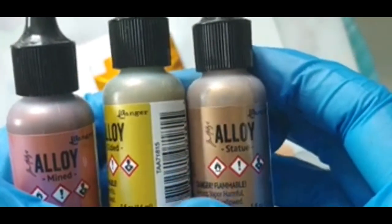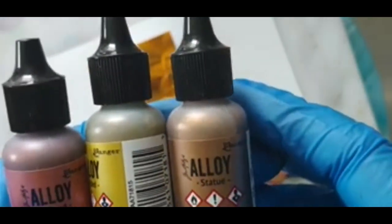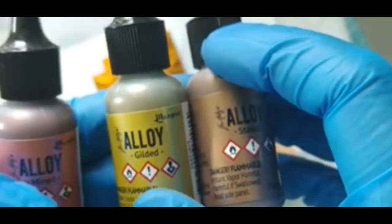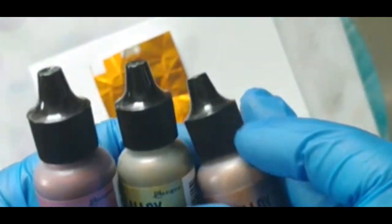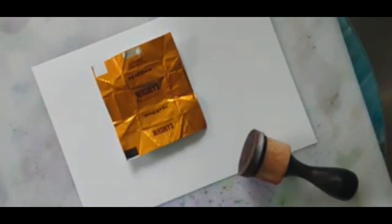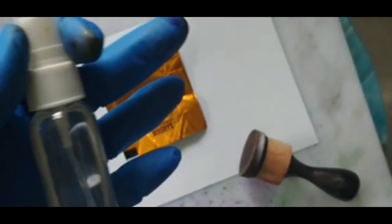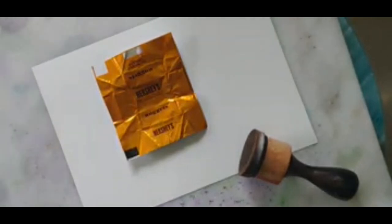For the yellow and orange, my favorite yellow Dijon—it's one of the new colors—and sunset orange. I have some alloys here. We have statue, which is kind of a bronze, gilded which is the gold, mind which is the copper, and silver which is called foundry. I also have alcohol ink blending solution and 91% isopropyl alcohol.